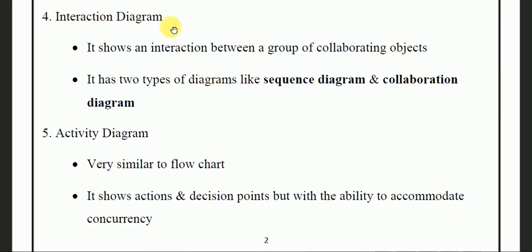Interaction diagram — it shows the interaction between a group of collaborating objects. The main emphasis of these kinds of diagrams is on the interaction between the objects. The interaction diagram is also divided into two categories: sequence diagram and collaboration diagram. These two types of diagrams are within the interaction diagram.